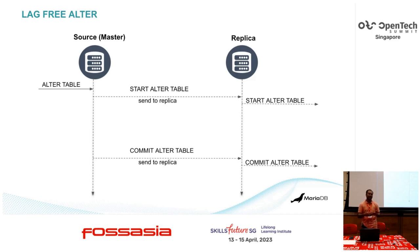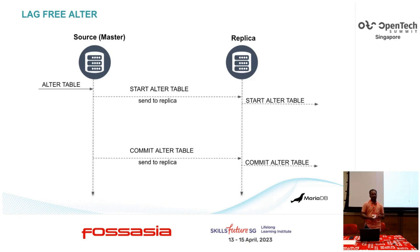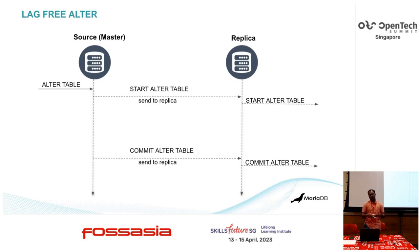Like how we handle XA transactions — XA prepare and XA commit or rollback — that same method we are implementing here. Every alter has two events: a start alter and then a commit or rollback alter command in the binlogs.